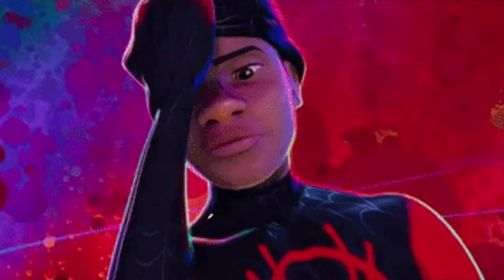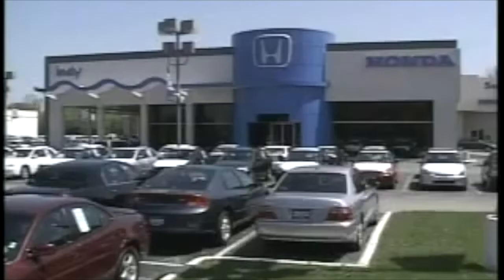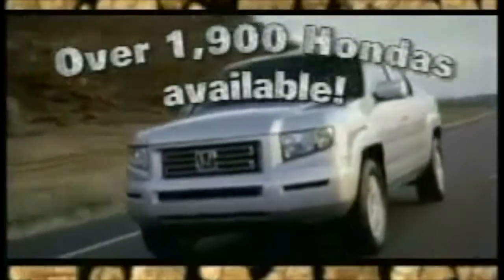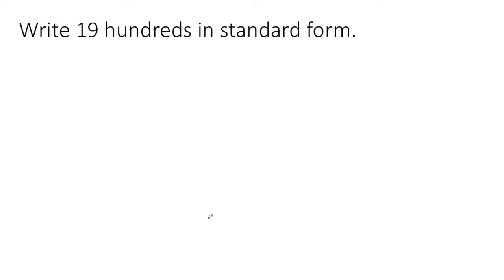Sometimes we have to go the other direction and put that mask back on. Here's an example of someone using another special number name. Over 1,900 Hondas available. Have you ever heard that before? Have you ever heard somebody say something like 1,900s? I have a lot. So now we need to write 1,900s in standard form. Let's do the place value chart just like we always do. I'm going to put 19 in my place value chart and I fill the rest in with zeros. I can see that right here I'm just going to add and make that 1,900.